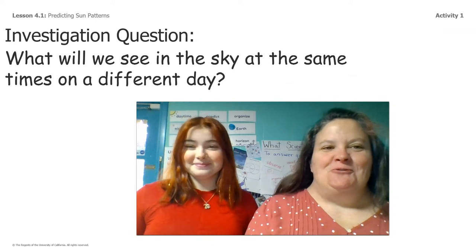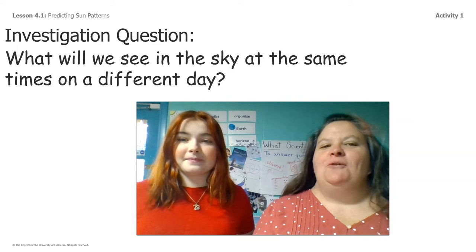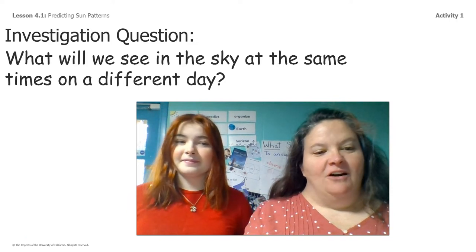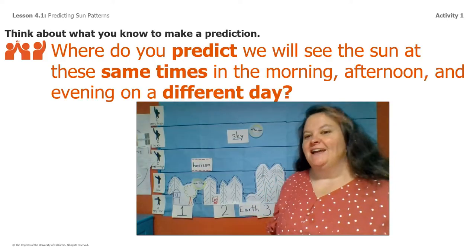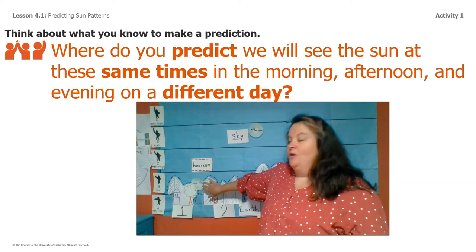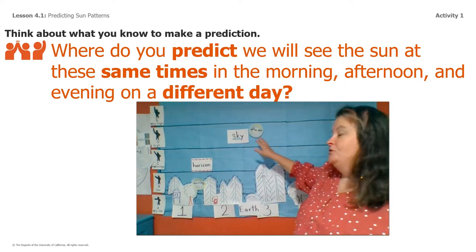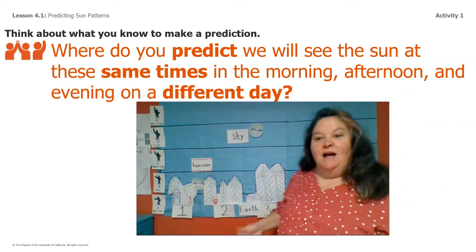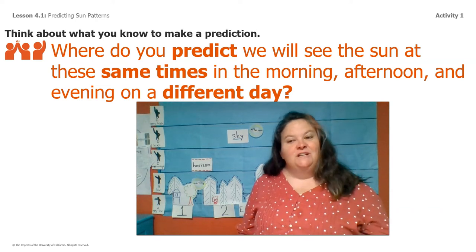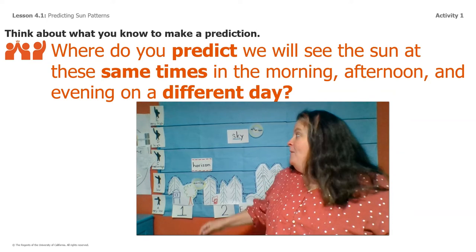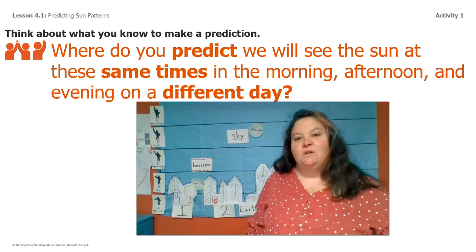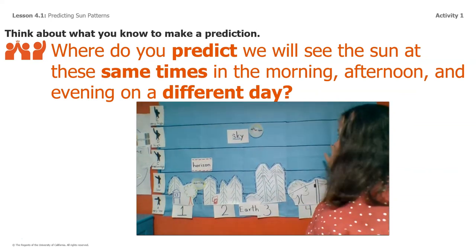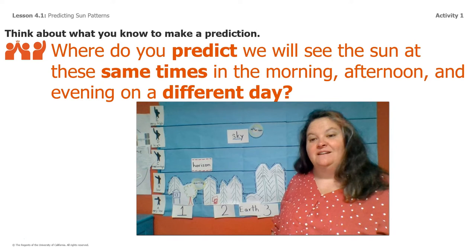In order to start answering our Chapter 4 question, we need to answer this smaller investigation question: what will we see in the sky at the same times on a different day? In order to do that, we need to look at our sky mural again. We have our three observations recorded for morning, afternoon, and evening, and all three of these observations were made on the same day. So I'm going to make another three sets of observations. But before we make those observations, I want us to predict where we will see the sun at the same time — morning, afternoon, and evening — but on a different day.